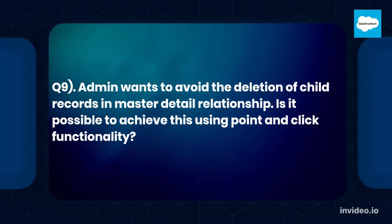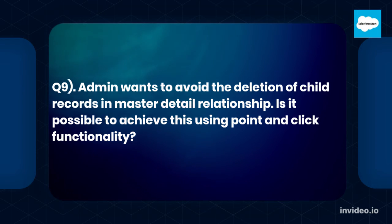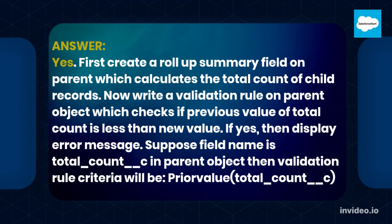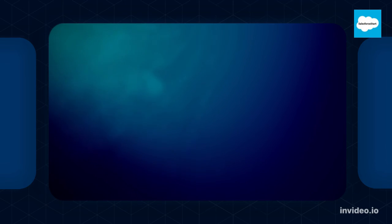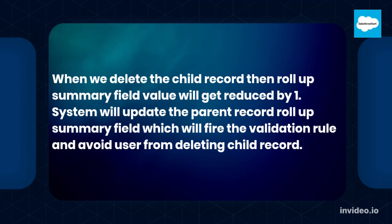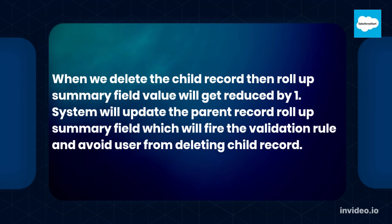Q9. An admin wants to avoid deletion of child records in a master-detail relationship. Is it possible to achieve this using point-and-click functionality? Yes. First, create a roll-up summary field on the parent that calculates the total count of child records. Then write a validation rule on the parent object that checks if the previous value of the total count is less than the new value — for example, PRIORVALUE(Total_Count__c) < Total_Count__c — and displays an error message. When a child record is deleted, the roll-up summary field value reduces by 1, triggering the validation rule on the parent and preventing the deletion.